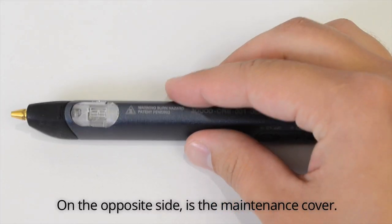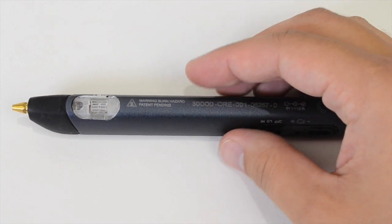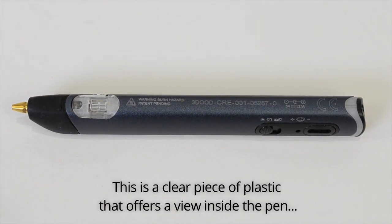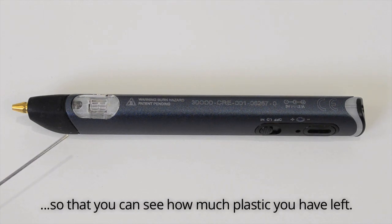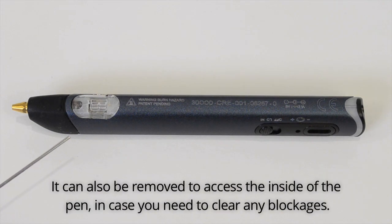On the opposite side is the maintenance cover. This is a clear piece of plastic that offers a view inside the pen so that you can see how much plastic you have left. It can also be removed to access the inside of the pen in case you need to clear any blockages.